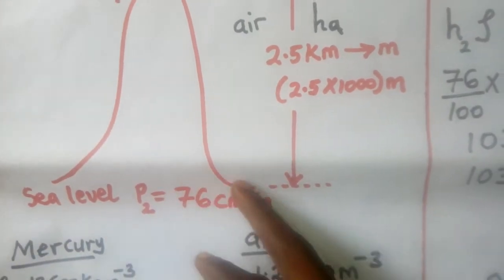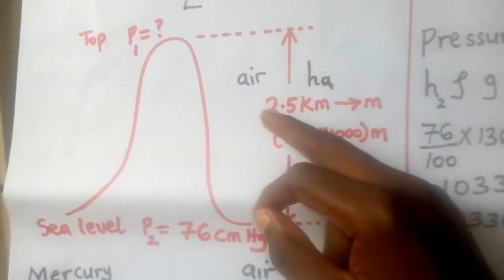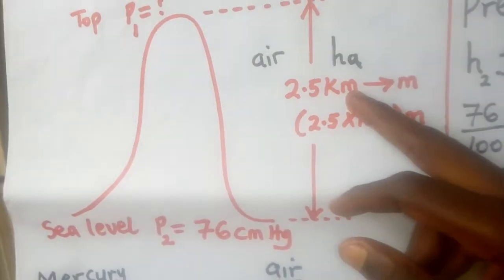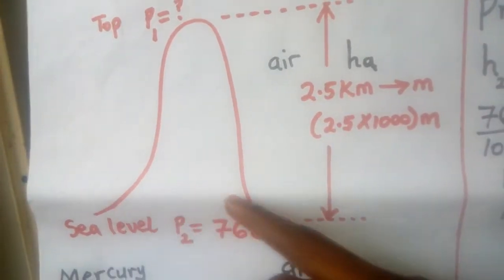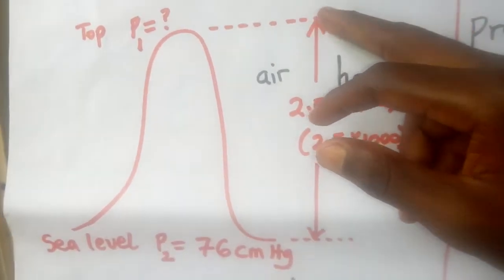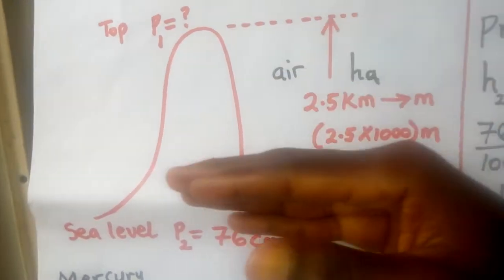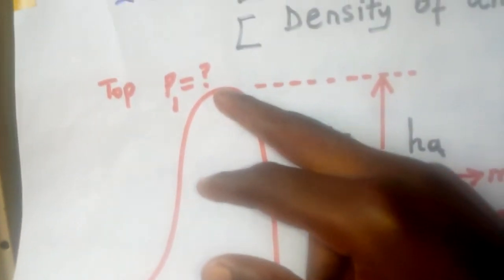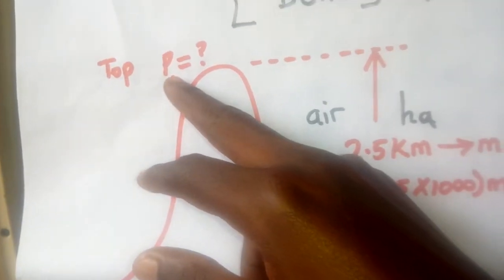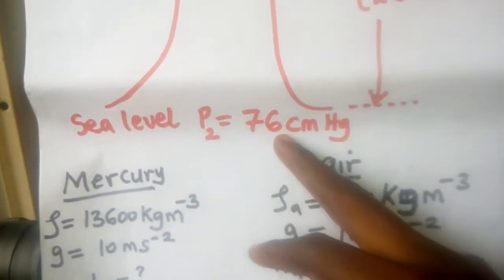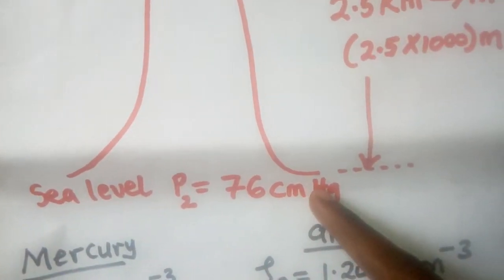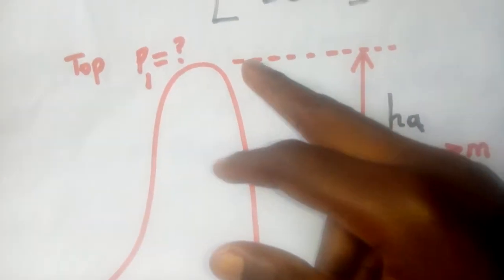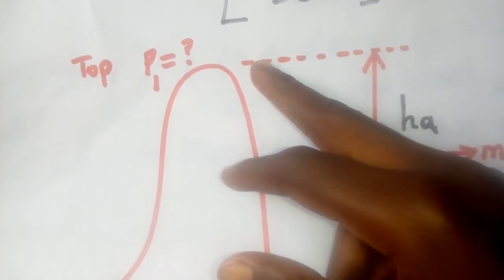When the barometer is raised from sea level up to a height of 2.5 kilometers — if this is the mountain — the altitude has increased from the bottom up to the top. What will the barometer read at the top of the mountain? We know at sea level the pressure is 76 centimeters of mercury, but what about the pressure at the top? That is what the examiner wants.